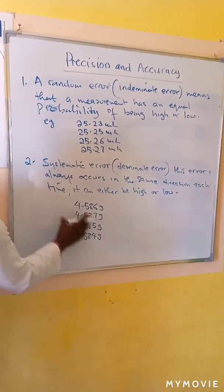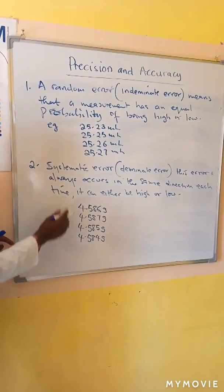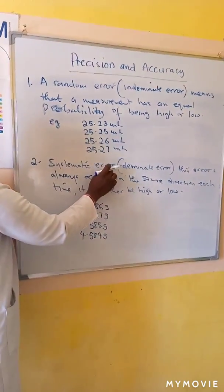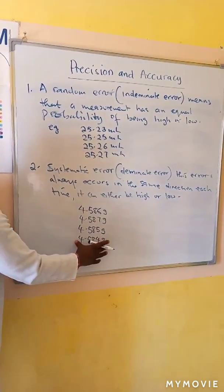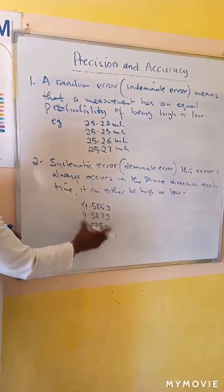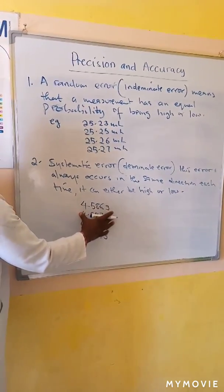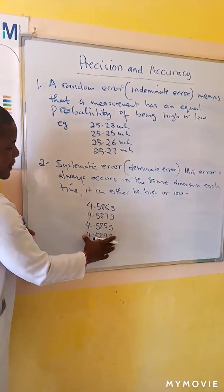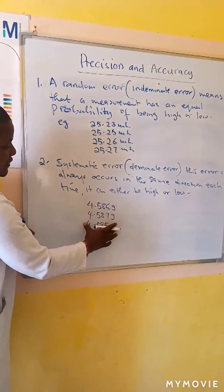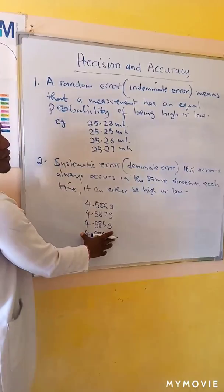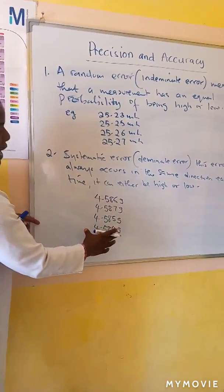But since the balance is defected, there is a systematic error. So this is the reason why we say good precision does not assume good accuracy.